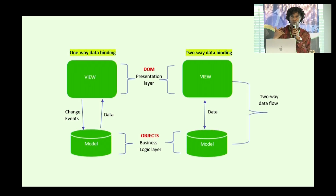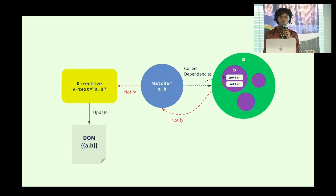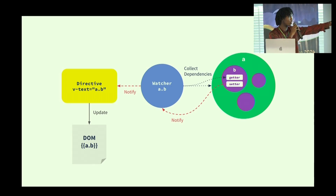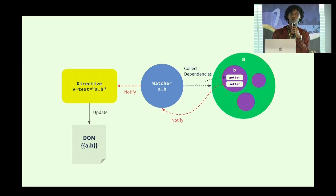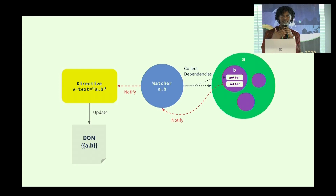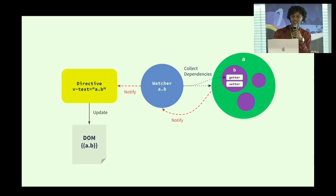At every point you add a character into the input, you immediately see that character on the DOM. At every point you remove or delete or change, you also see those same updates in the DOM. We have directives which update the DOM, and we have a watcher which communicates with the directive — the directive notifies the watcher and we also have a getter and a setter. Getters are used to retrieve and fetch; setters are used to update. That process is also like the reactivity, and Vue took that behavior from JavaScript.